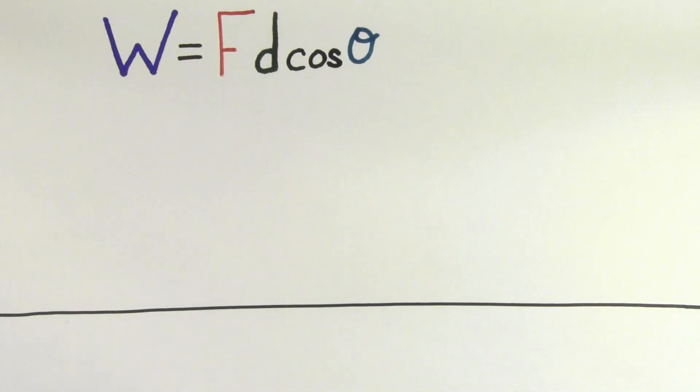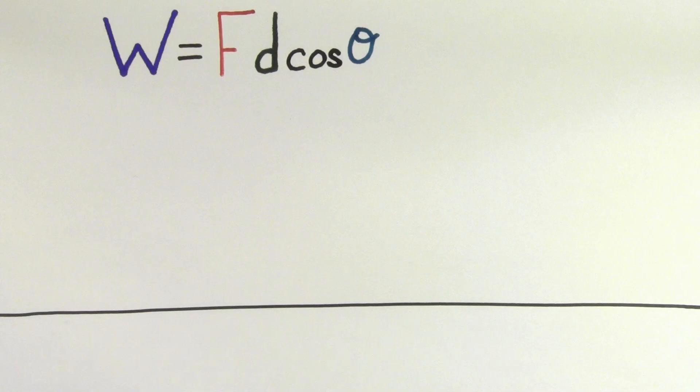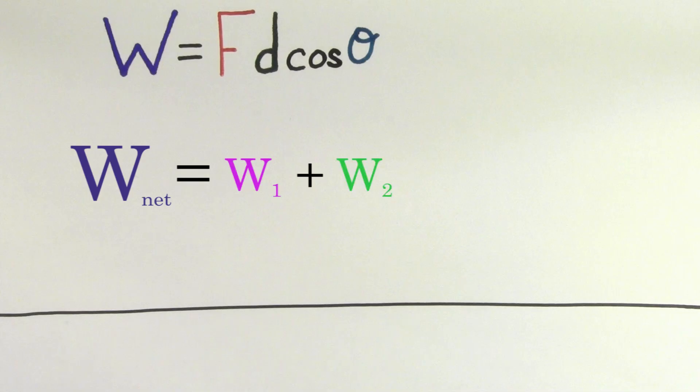This formula represents the definition of the work done by a particular force. But what if we wanted to know the net work or total work done on an object? We could just find the individual amounts of work done by each particular force and add them up.